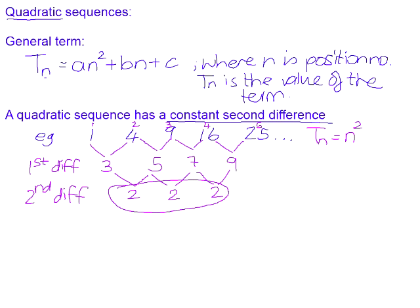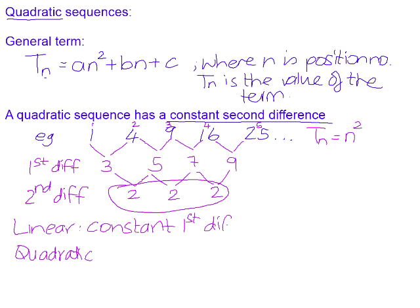If you want to know whether a sequence is linear or quadratic, you investigate the differences. If your sequence is linear, you will have a constant first difference. If your sequence is quadratic, you will have a constant second difference.